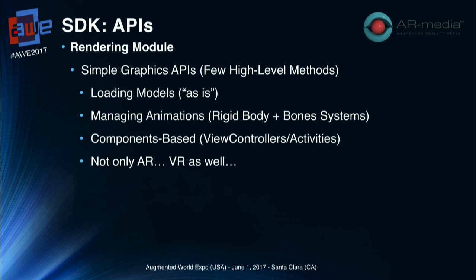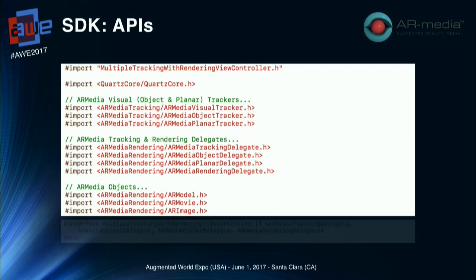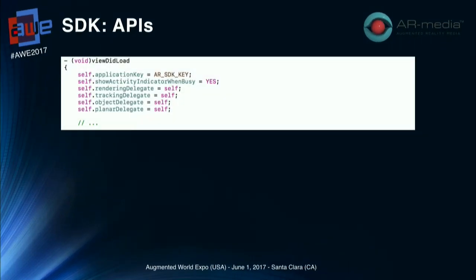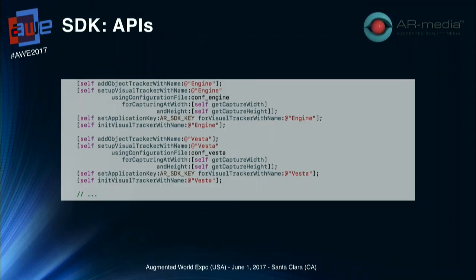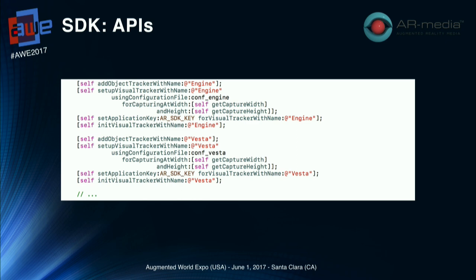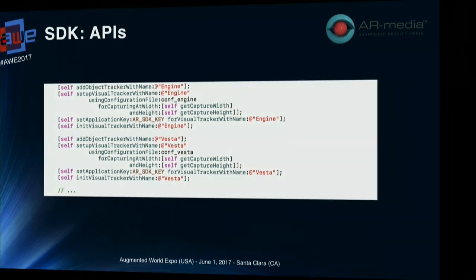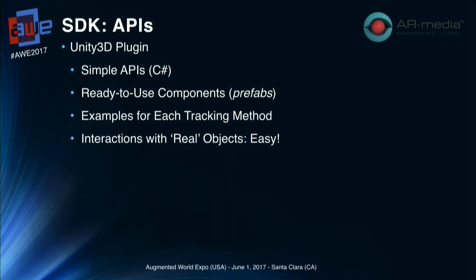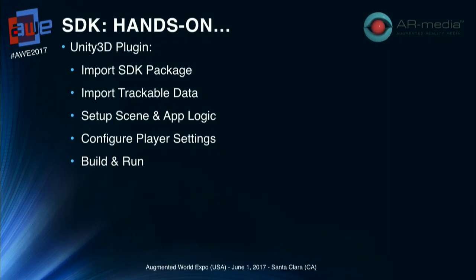The rendering module is made with simplicity in mind — you can load models and animation as-is without any format conversion. There are also examples showing how to load two trackers at the same time. The Unity plugin is very simple: it comes with a set of prefabs and components that allow you to drag and drop SDK components into your Unity project. You import the SDK package, import the trackable data, set up the scene as you want, and compile for mobile platforms.